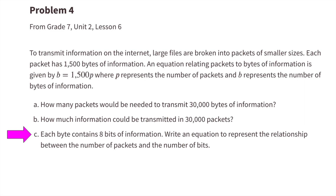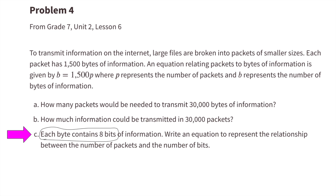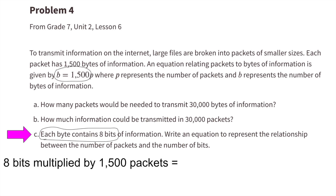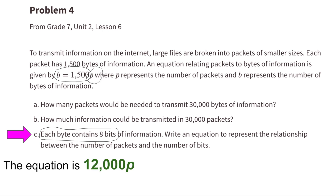Part C: each byte contains 8 bits of information. Write an equation to represent the relationship between the number of packets and the number of bits. 8 bits multiplied by 1,500 bytes per packet equals 12,000. The equation representing the relationship between the number of packets and the number of bits would be 12,000 times P, or 12,000P.